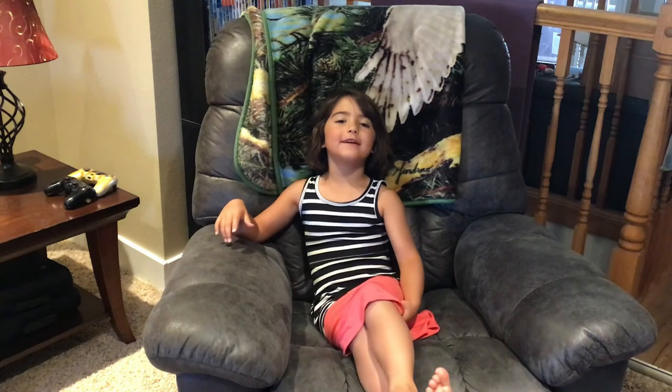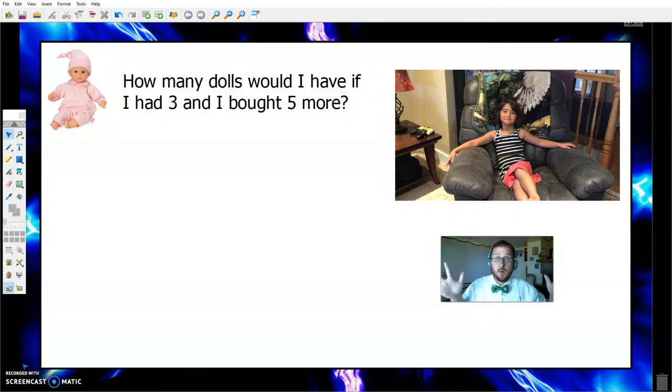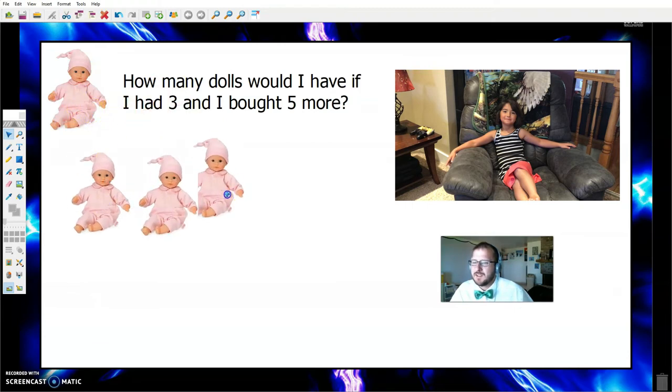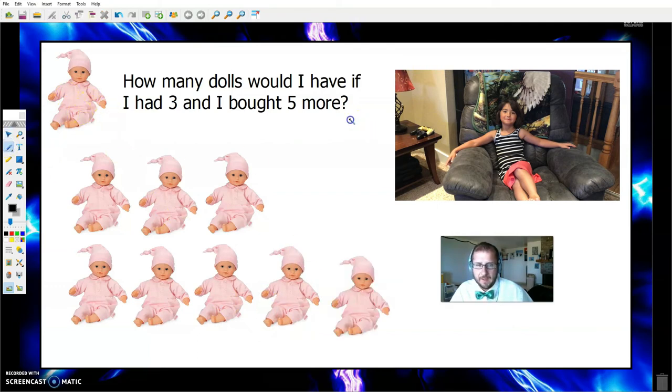This week's apprentice question comes to us from an apprentice named Grace. Hi Abacus, how many dolls would I have if I had three and I bought five more? This is so adorable. One doll, two dolls, three dolls. There's what she had. One doll, two doll, three doll, four doll, five dolls. So we had three and we're adding five to that. One, two, three, four, five, six, seven, eight. Grace now has eight dolls. Thanks for that question Grace.